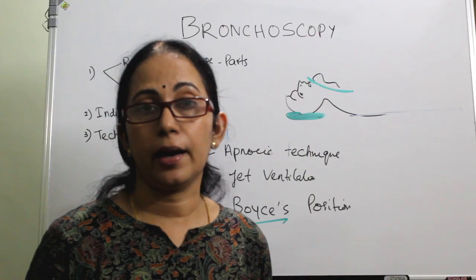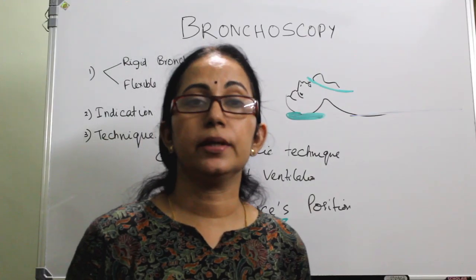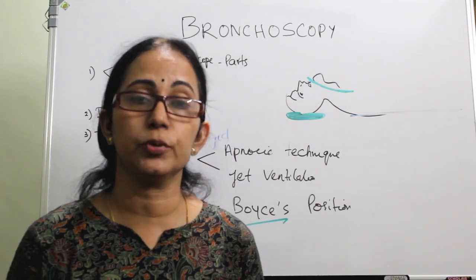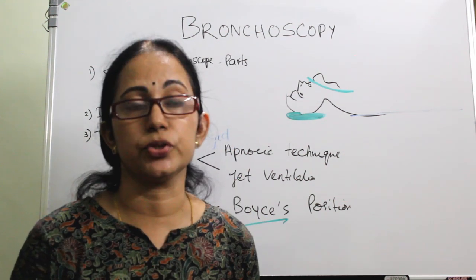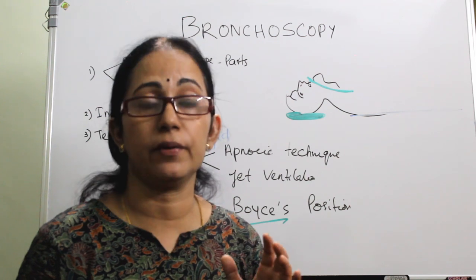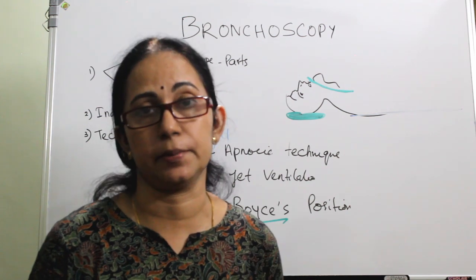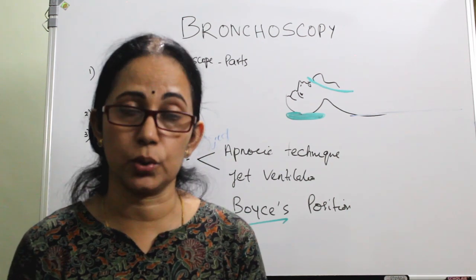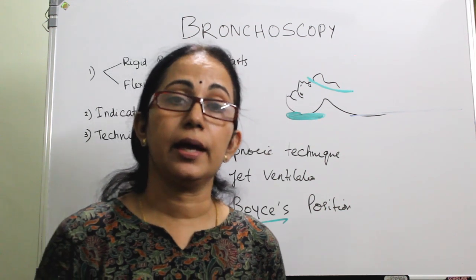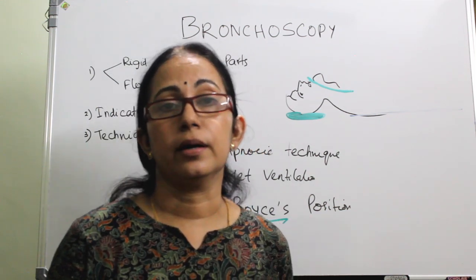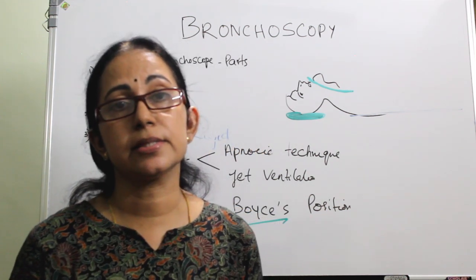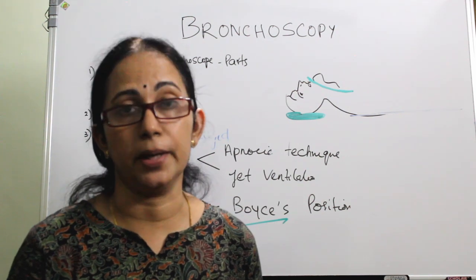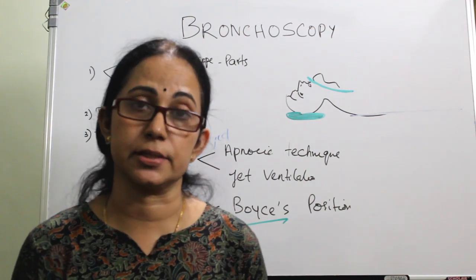From the trachea, follow the curve to the carina keeping the scope in the midline — you can see the carina with the right and left bronchi, and the distal tip can be directed into either main bronchus. After bronchoscopy, keep the patient in the coma position — lateral position with head low, same as post-tonsillectomy. Monitor for respiratory distress, cyanosis, and spitting of blood.